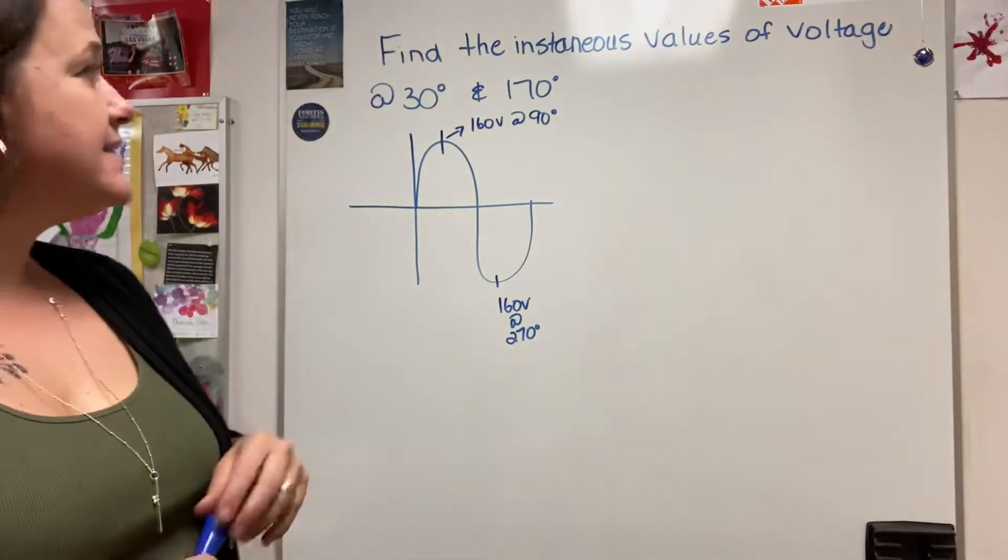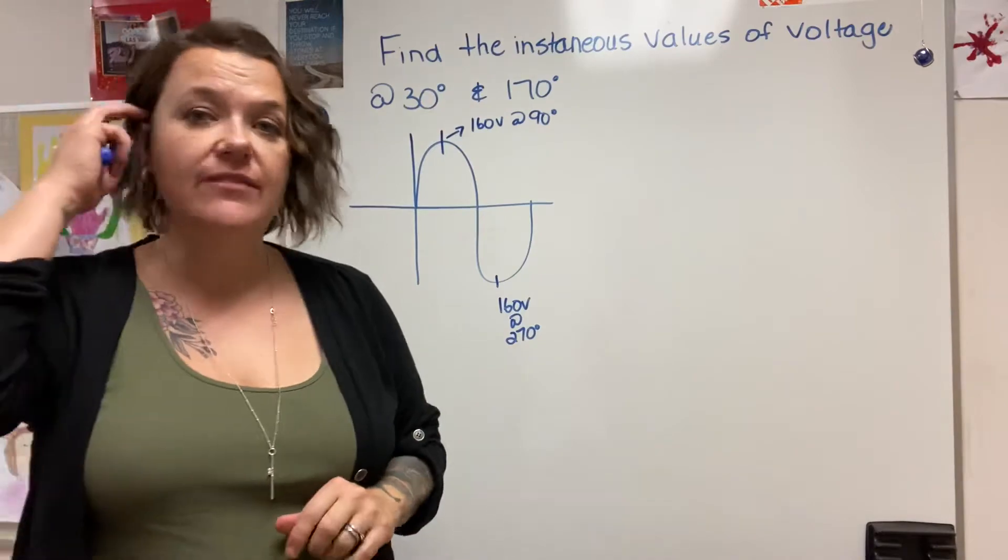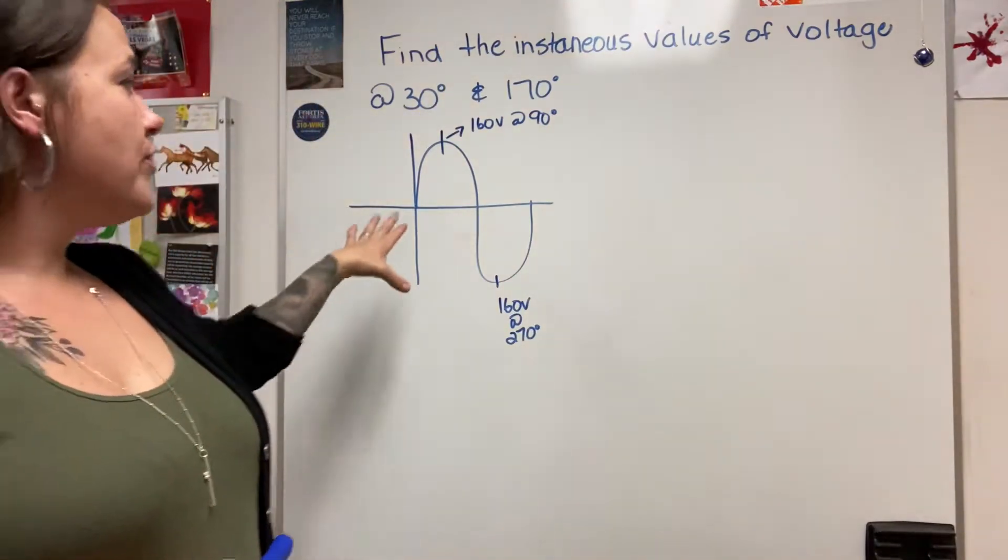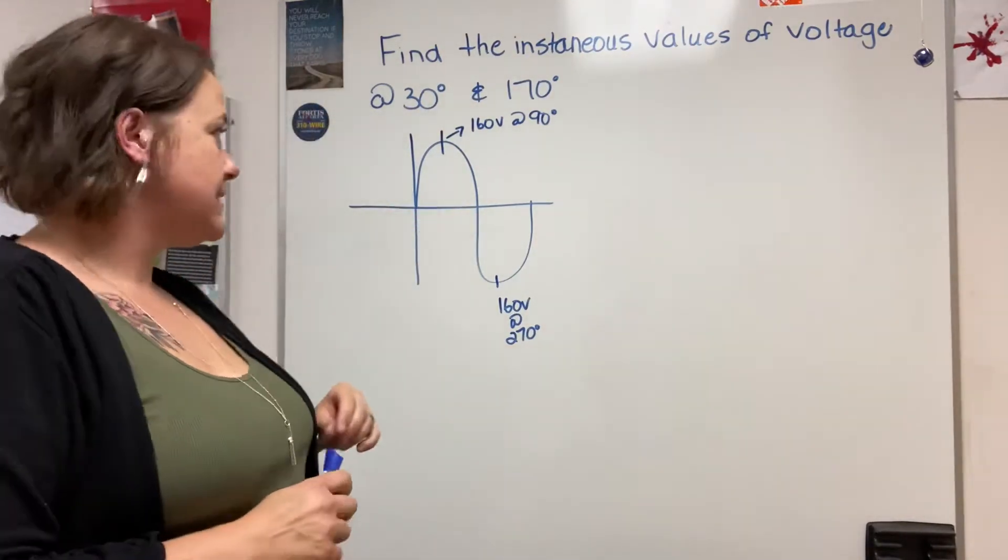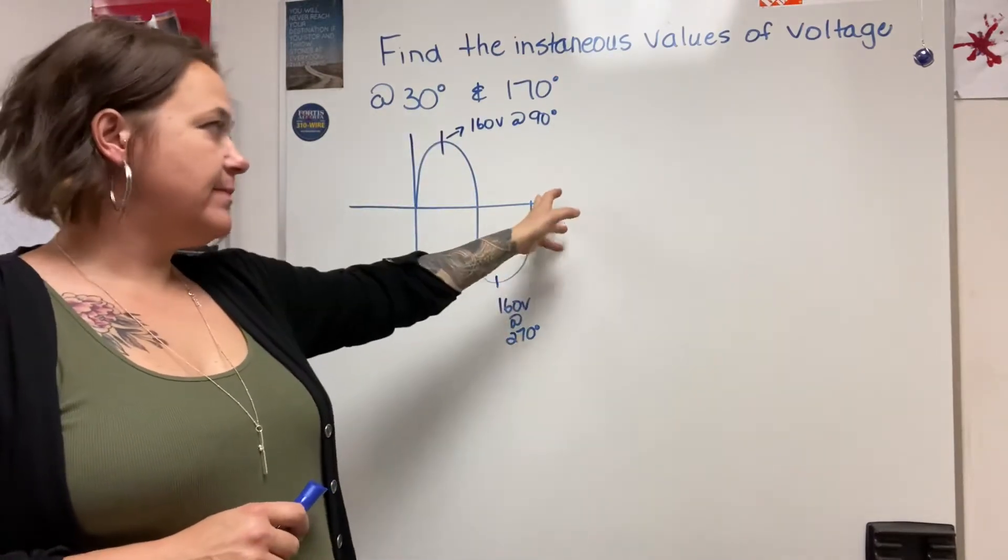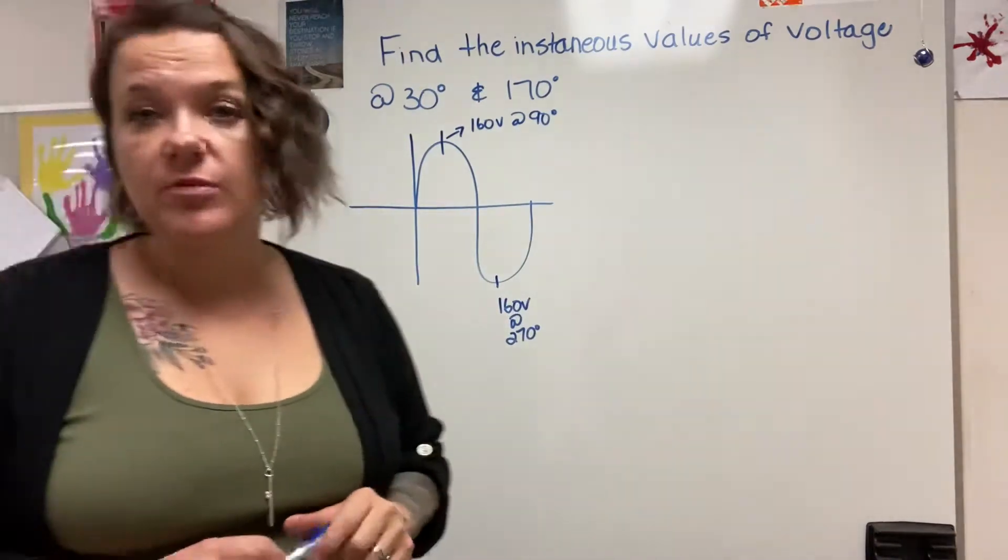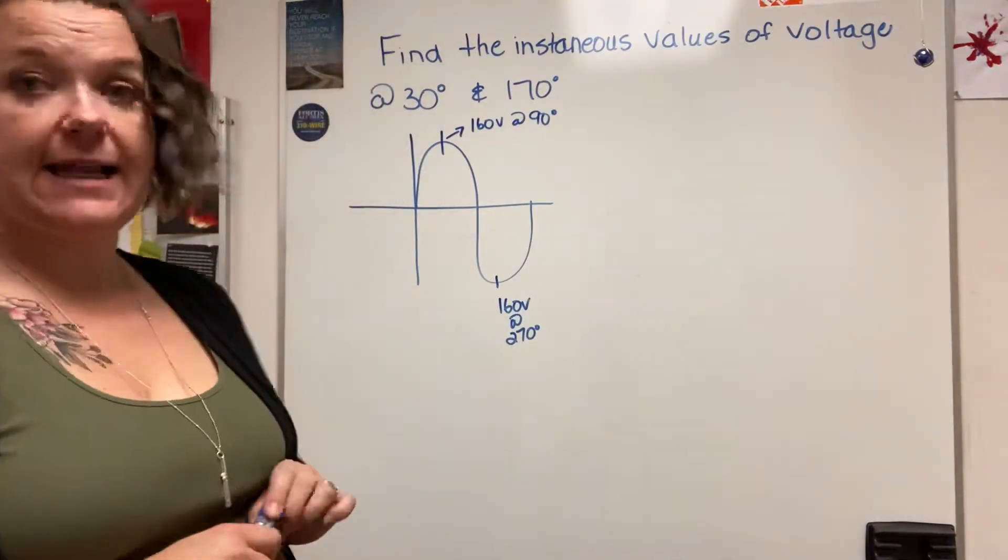Find the instantaneous value of voltage at 30 degrees and at 170 degrees. We know that an AC sine wave consists of 0, 90, 180, 270, 360 degrees essentially, and your maximum value of voltage occurs at its peaks.